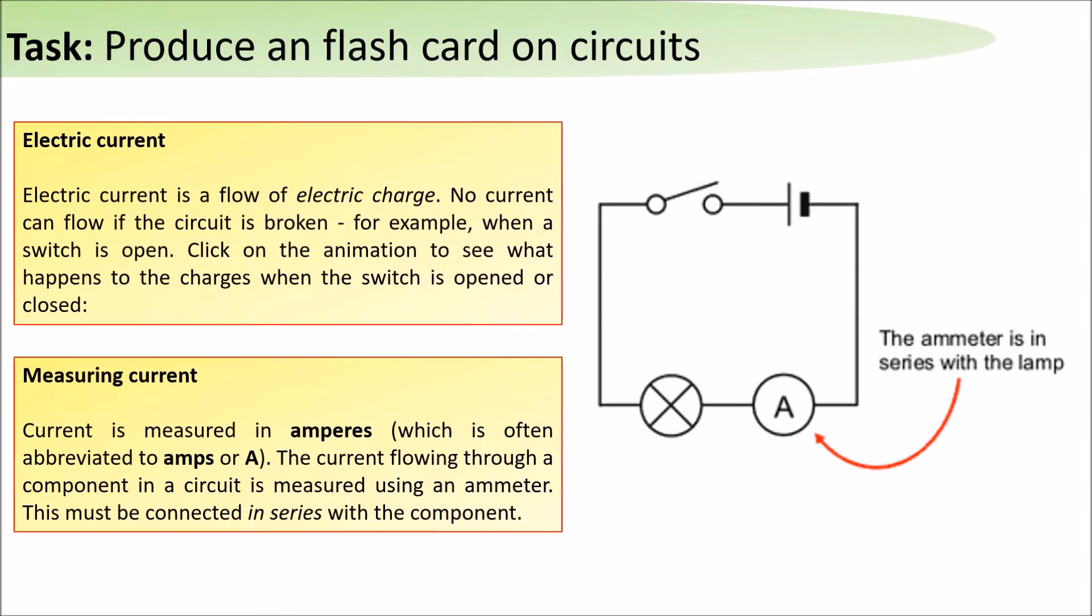Current is measured in amps. The current flowing through a component in a circuit is measured using an ammeter. Ammeters must be connected in series.